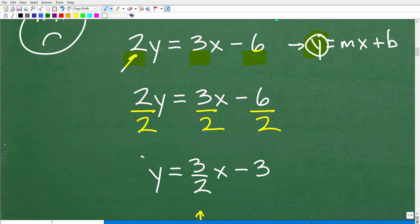So let's go and divide everything by 2 because 2 divided by 2 will give me 1y or y, and that's my objective. But remember, in algebra, whatever you do to one side of the equation, you have to do to the other side as well. So we're going to divide everything by 2. So 2 divided by 2 is 1 or 1y or y. So 3 divided by 2 is, of course, 3 halves x minus 6 divided by 2 is 3.